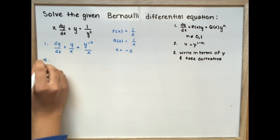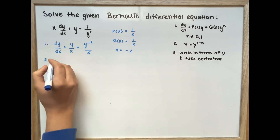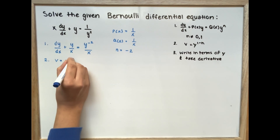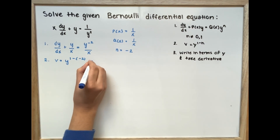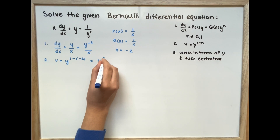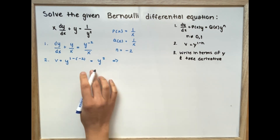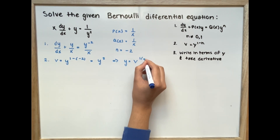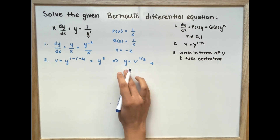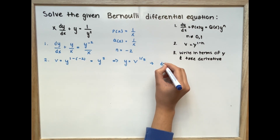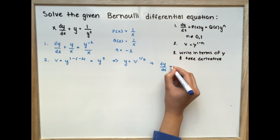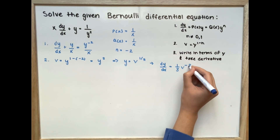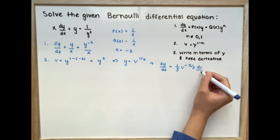For our second step, we're going to set v equal to y to the power of 1 minus negative 2, which gives us y to the power of 3. We rewrite this in terms of y, so y equals v to the power of 1 third. Taking the derivative, dy over dx equals 1 third times v to the power of negative 2 thirds times dv over dx.